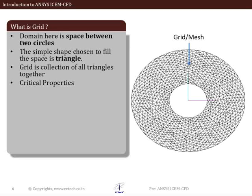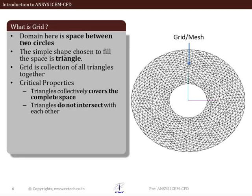The generated grid should follow some governing laws and should have some critical properties. The first important property is that all the triangles should collectively fill the complete domain and there should not be any unmeshed region in the domain of interest. The second property is that none of the triangles should intersect with each other. All the triangles should be connected to its neighbors at their vertices.